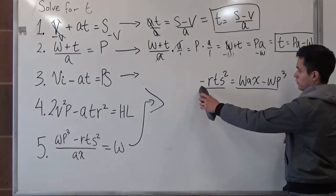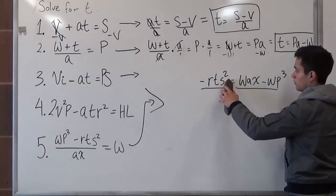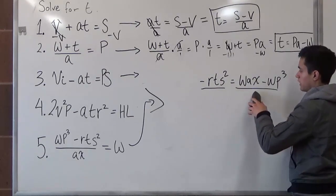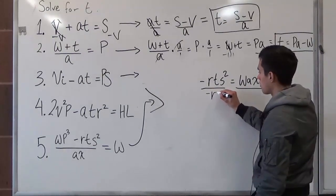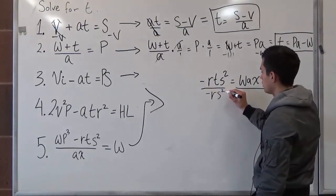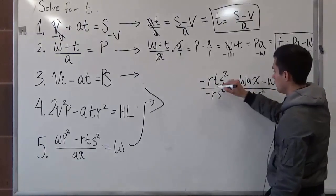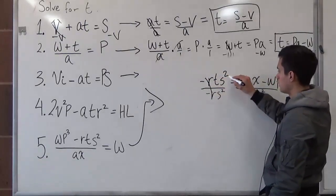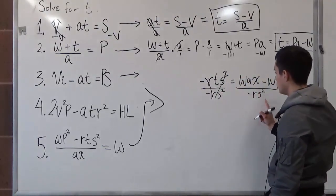To get t by itself, we see that negative r times s squared, we'll have to bring that down and divide it in order to just get t by itself. So negative r times s squared, negative r times s squared. Negative r and negative r cancel out. S squared and s squared cancel out, and this moves over.